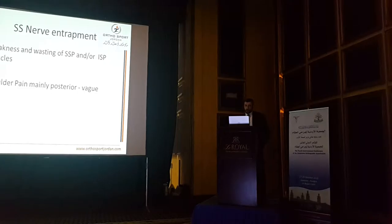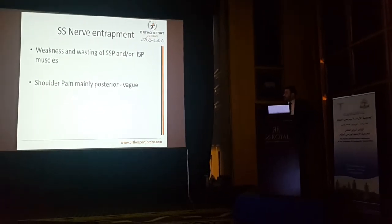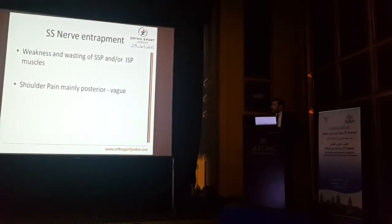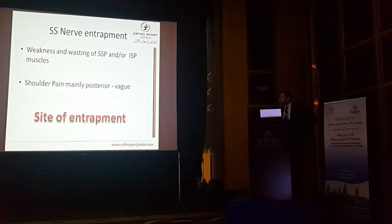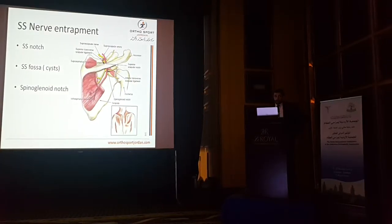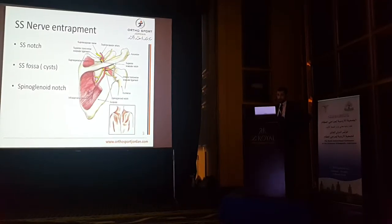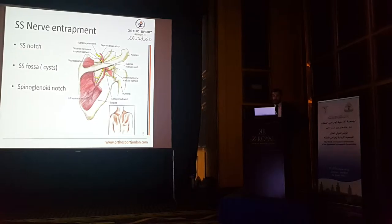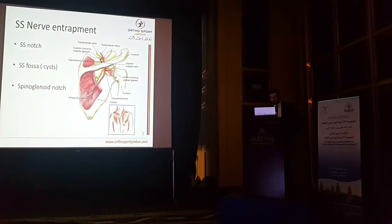We can predict that a patient with suprascapular nerve entrapment has motor dysfunction — weakness and atrophy of the supraspinatus and/or infraspinatus — and may also have pain. This depends on the site of entrapment. The site can be in the suprascapular notch, or in the spinoglenoid notch. In these two positions it may result from a cyst or a specific space-occupying lesion.